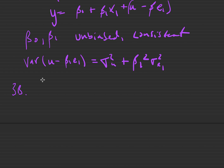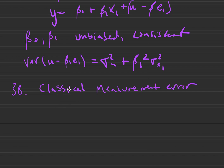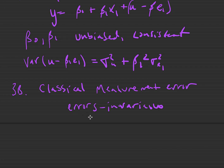Now let's look at the case of 3b. Assumption 3b is the classical measurement error, or classical errors-in-variables, case — you'll see either of these terms and they mean the same thing. This is the case where the measurement error is uncorrelated with the unobserved explanatory variable but correlated with the observed explanatory variable.